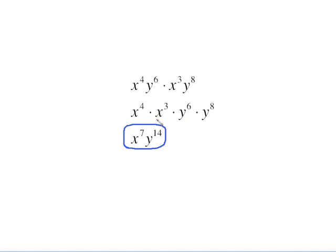You might have more than one letter at a time, and a suggestion until you get comfortable with these rules is to rewrite your problem so that your like terms are sitting next to each other. Notice I have x here and x there. I also have y and y.